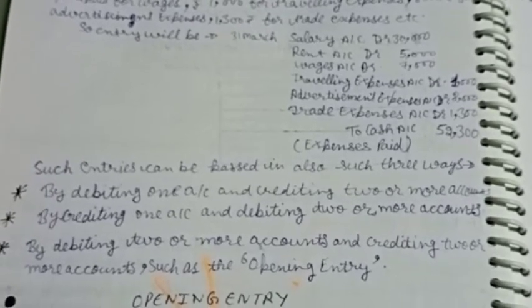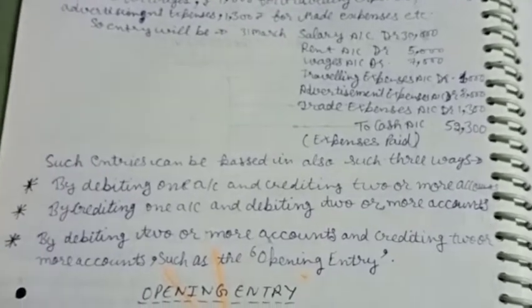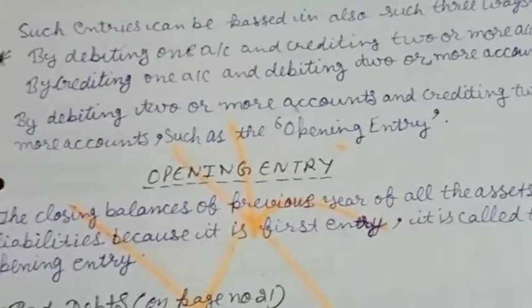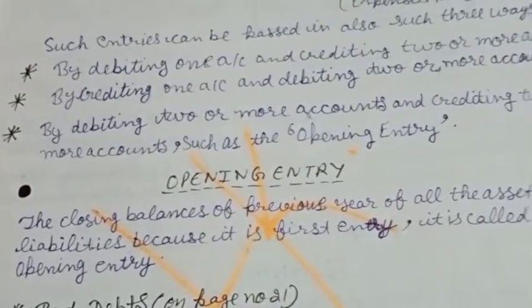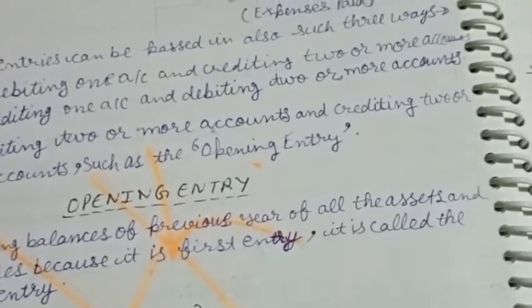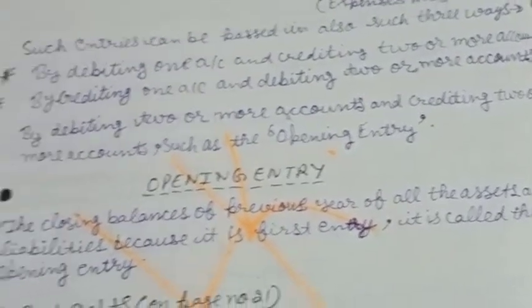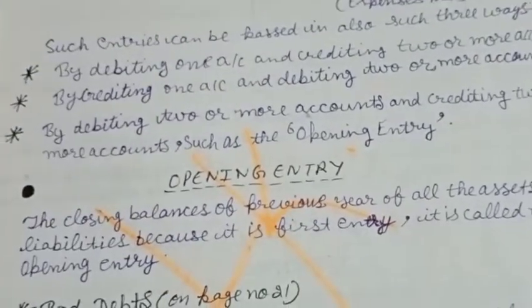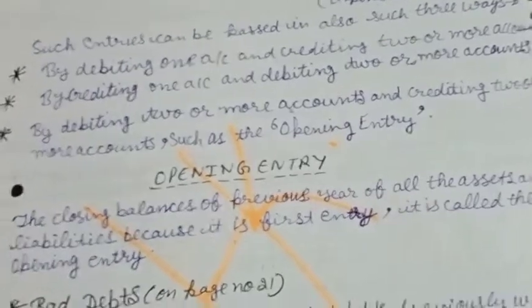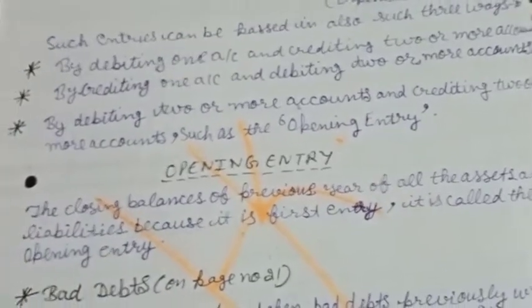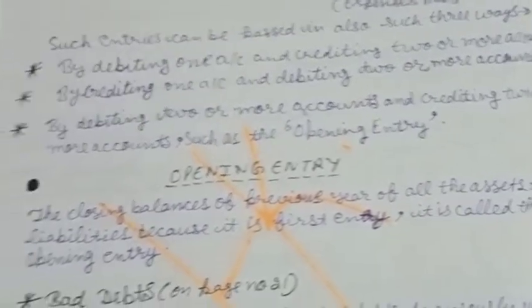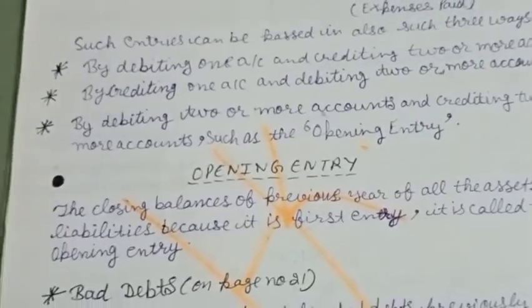An example of debiting two or more accounts and crediting two or more accounts is the opening entry. The closing balances of the previous year of all assets and liabilities become the opening balances of the next year — therefore it is called the opening entry.